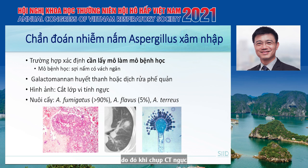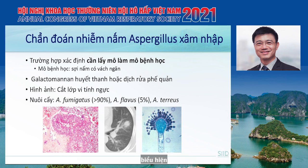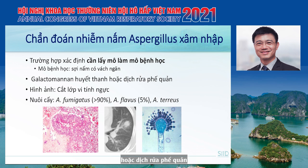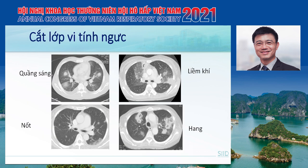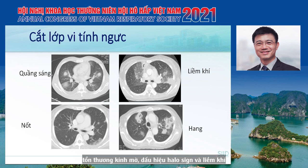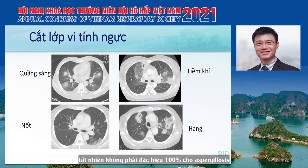Therefore, on CT scan of the chest, you will see nodules and the halo sign or ground-glass opacity surrounding the lesion. Another tool for diagnosis is serum testing or BAL—bronchoalveolar lavage—for galactomannan. Culture from the respiratory specimen is also helpful for diagnosis if biopsy cannot be obtained.